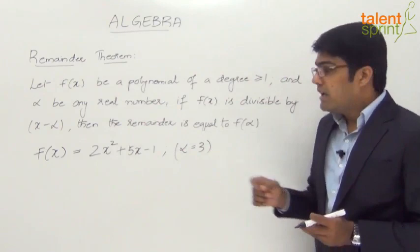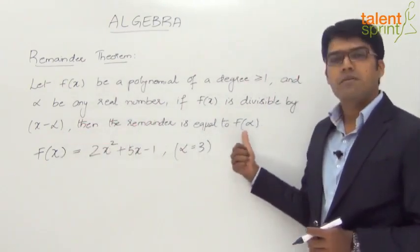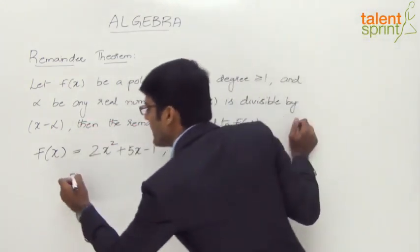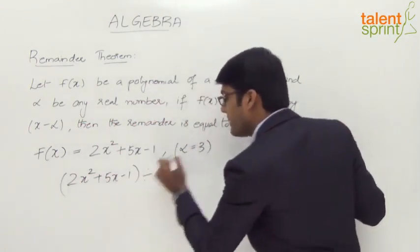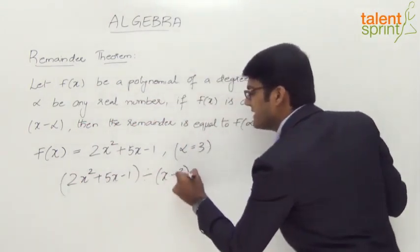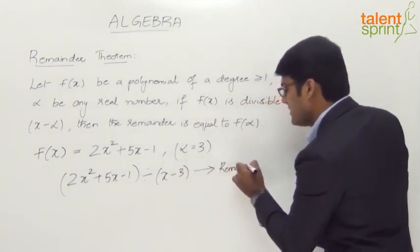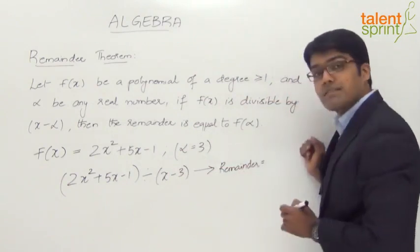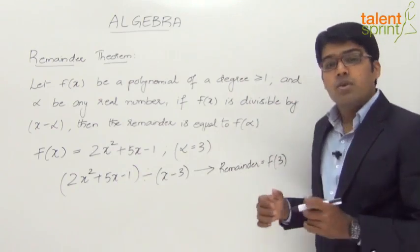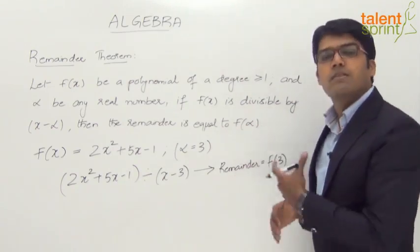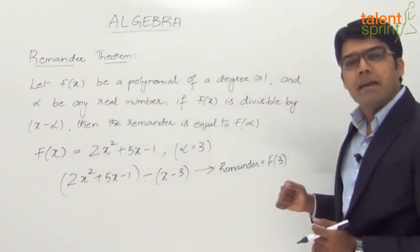The theorem states that when this polynomial is divided by x minus 3, which is x minus alpha, the remainder is going to be f of alpha. So you divide 2x squared plus 5x minus 1 by x minus 3. The remainder is f of alpha, which is f of 3. We do not have to do the long division to find out what the remainder is.